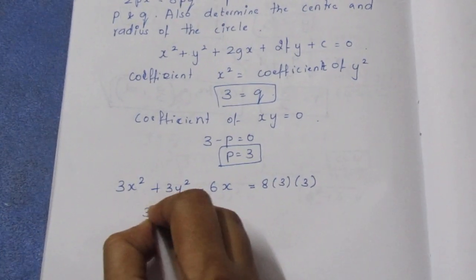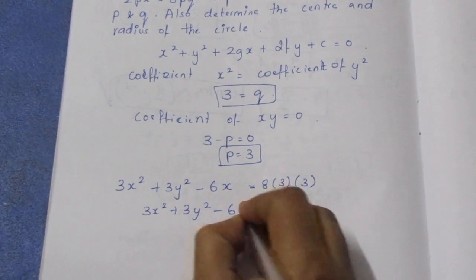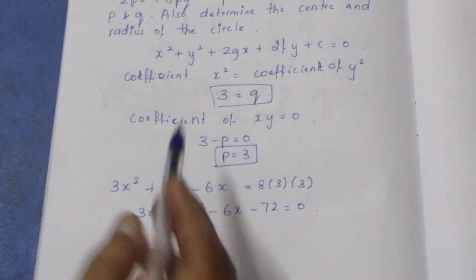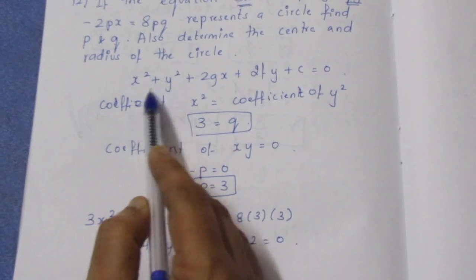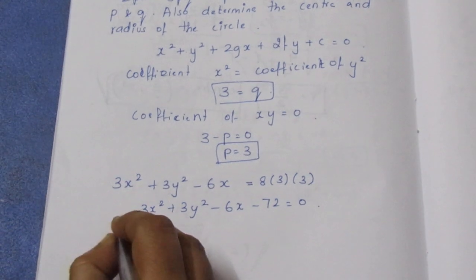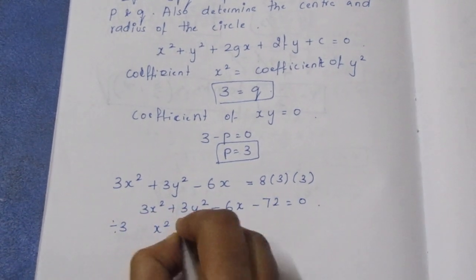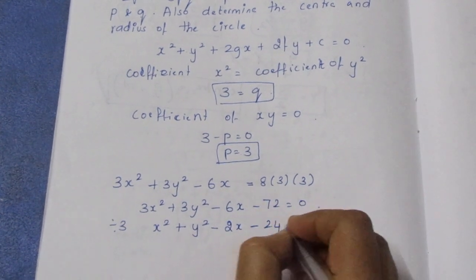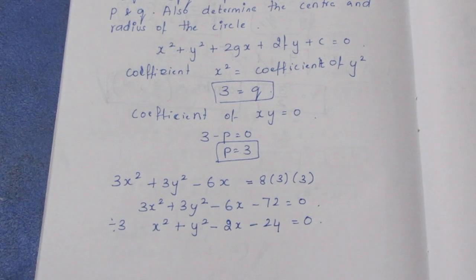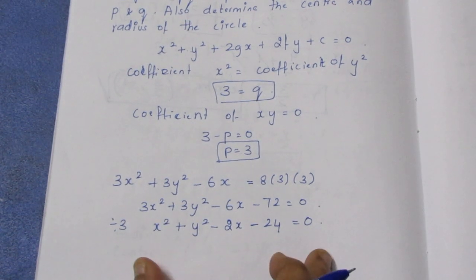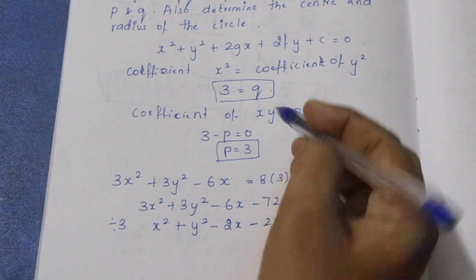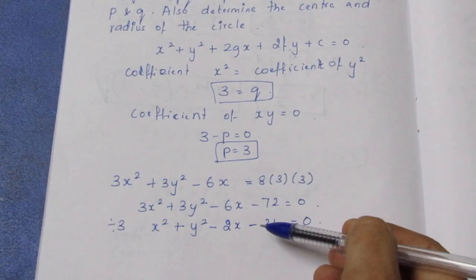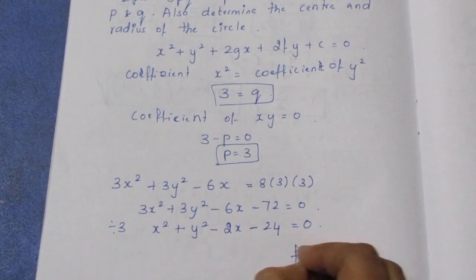This equals 0. So 3x² + 3y² - 6x - 72 = 0. Dividing by 3, we get x² + y² - 2x - 24 = 0.